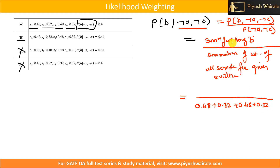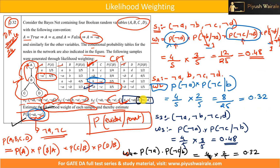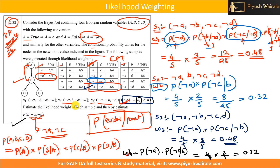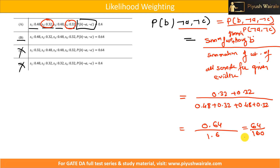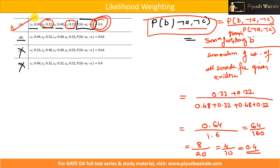The numerator is the summation of weights of samples having positive B. Looking at the samples, positive B appears in S2 and S4 — so W2 and W4. That is 0.32 + 0.32 = 0.64. The denominator is 0.48 + 0.32 + 0.48 + 0.32 = 1.6. So the result is 64/160 = 4/10 = 0.4. So the probability P(B | ¬A, ¬C) = 0.4, and option A is correct.